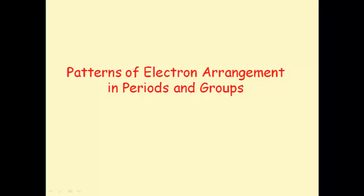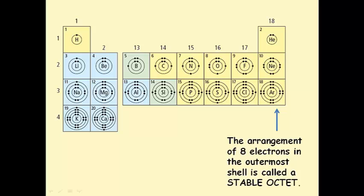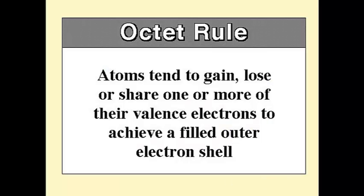There is a maximum of 2 electrons in the first shell, 8 in the second shell, and 8 in the third shell. Notice that the only elements with a full outer shell are noble gases — they are very stable. Non-noble atoms are unstable unless they have 8 electrons in their outermost shell, so they attempt to gain or lose electrons to have a full outer shell.